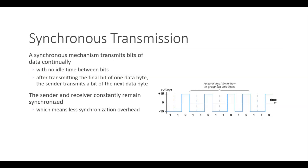Each bit is sent one after the other, and the receiver counts the bits and reconstructs bytes. Timing must be maintained with no start and stop bits and no gaps; accuracy is dependent on the receiver keeping an accurate count of the bits as they come in. Synchronous transmission is faster than asynchronous because fewer bits have to be transmitted — only data bits and no extra control bits — making it the choice for network communication links.